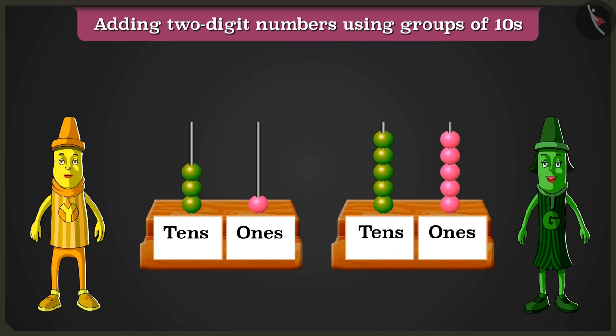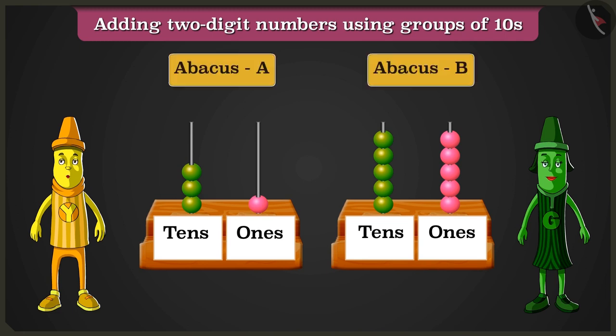Well done, Greeny. Hey, yellow, what is this? That is an abacus. Let us look at another example.